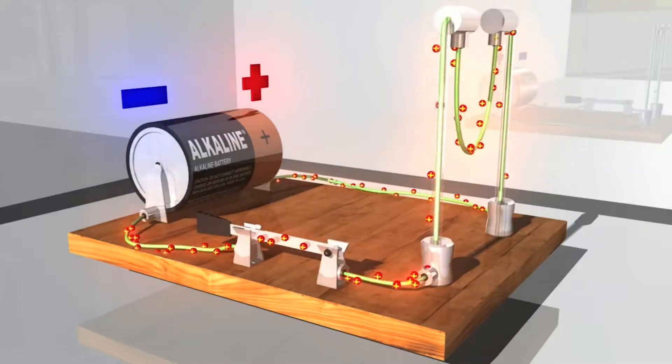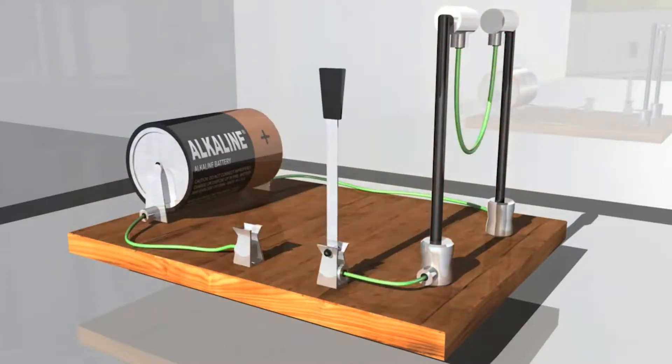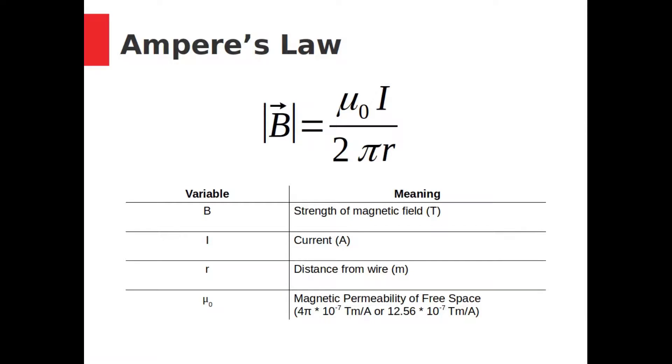If a wire is perfectly straight and very long, the strength of the magnetic field it produces is given by this equation. This is Ampere's law. It shows that the strength of the magnetic field depends on two factors: the current I and the distance from the wire R. You'll notice one new symbol, that mu zero in the numerator. That is a constant of nature called the magnetic permeability of free space. It describes how magnetic fields get weaker with distance. It's a universal constant. It is extremely important.